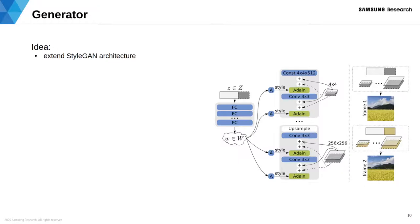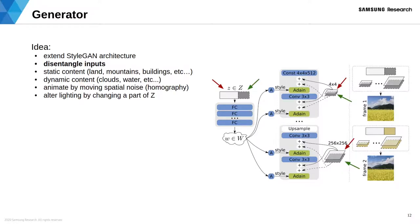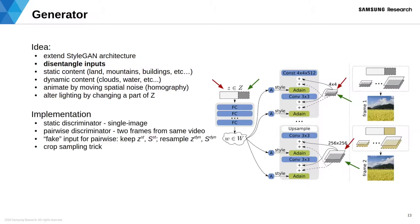Our generator is based on the StyleGAN architecture. StyleGAN originally had two inputs: vector Z and a set of spatial noise matrices S. We modify StyleGAN by introducing two more inputs: Z_dynamic and spatial inputs S_dynamic. We train the generator with two discriminators. The static discriminator takes separate images and focuses on image quality. The pairwise discriminator takes pairs of frames and predicts whether they belong to the same video.